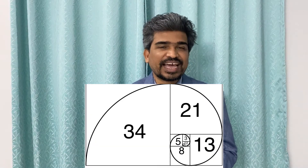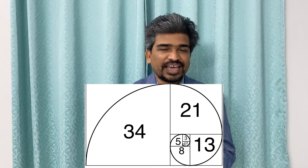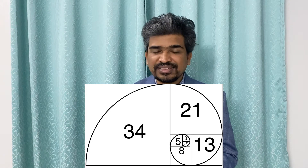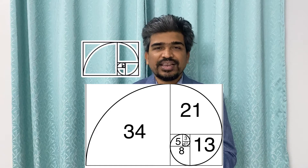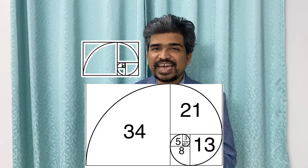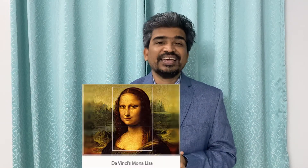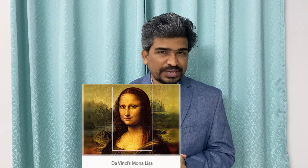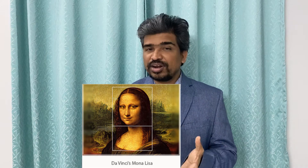If you make squares and rectangles using all the units of the sequence, and connect the diagonals of each rectangle and square, you'll get a curve something like this — and that is based on the golden ratio. The golden ratio is also used in art; for example, it is used in the Mona Lisa.